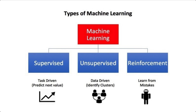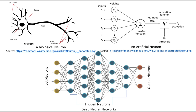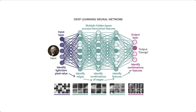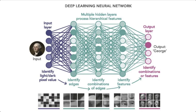Deep learning is also a type of machine learning technique that tries to imitate the human brain by putting input data through a biologically inspired neural network. This network contains a number of hidden layers through which the data is processed, making connections and creating patterns. Siri, Alexa, and Google Assistant are examples of applications that use deep learning to understand language.